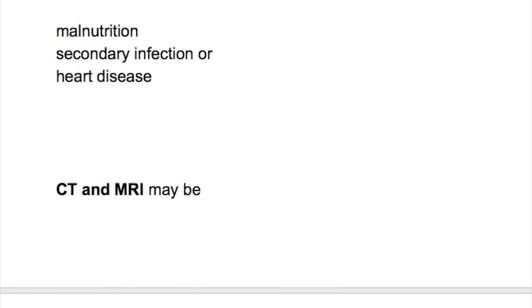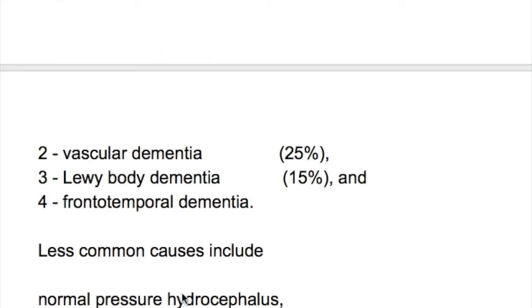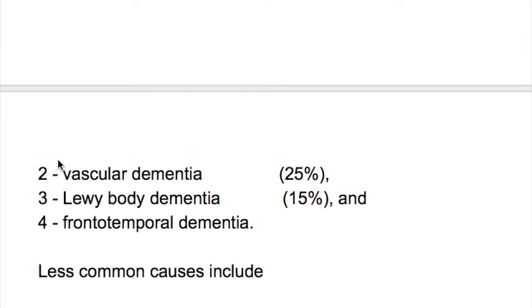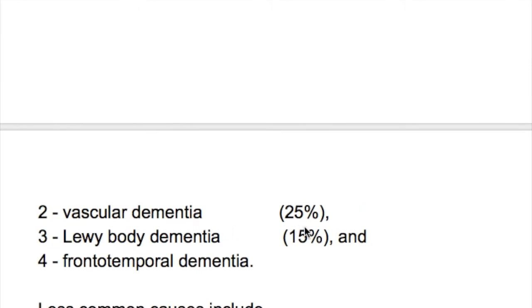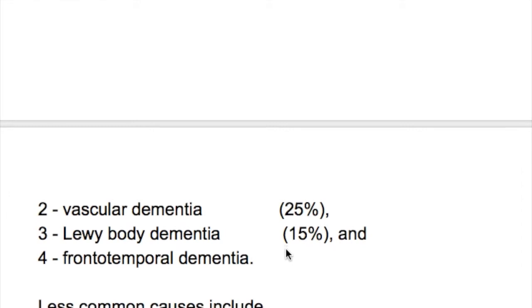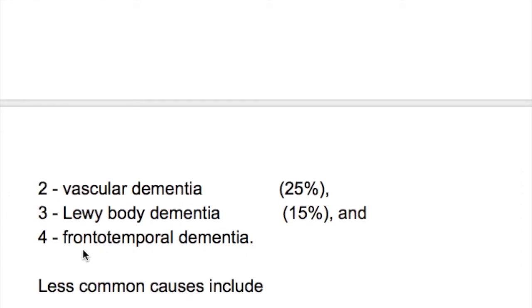Death may occur from malnutrition, secondary infection, or heart disease. The most common cause of dementia is Alzheimer's disease, affecting 50 to 70 percent of patients. The second most common is vascular dementia at 25 percent, Lewy body dementia at 15 percent, and frontotemporal dementia.